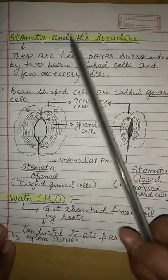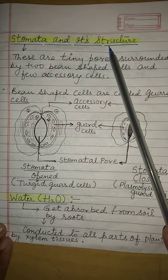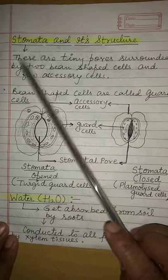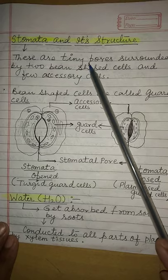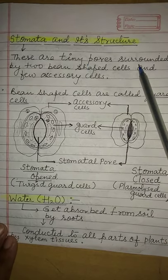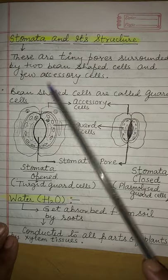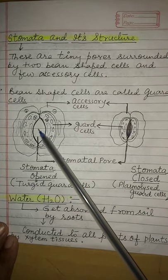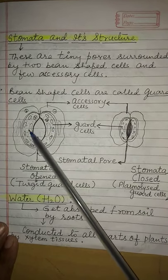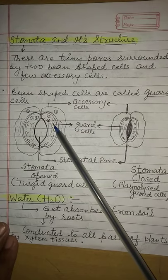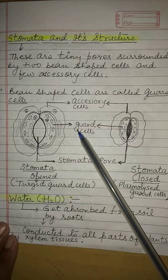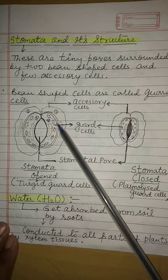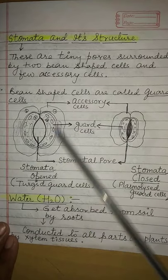Now we will discuss stomata and its structure. Stomata are the tiny pores which are surrounded by two bean-shaped cells and a few accessory cells. The bean-shaped cells surrounding the pore are known as guard cells. These two bean-shaped guard cells are again surrounded by several accessory cells.